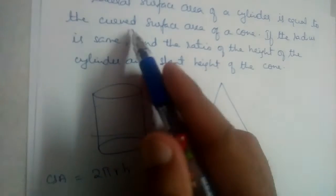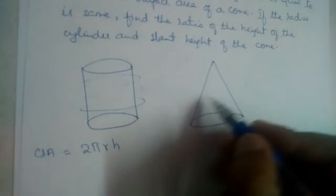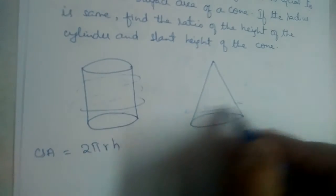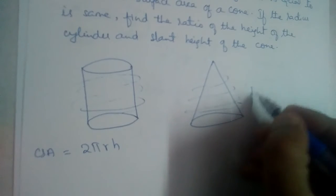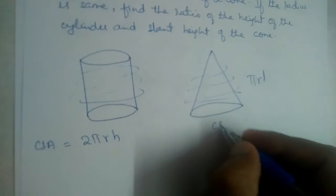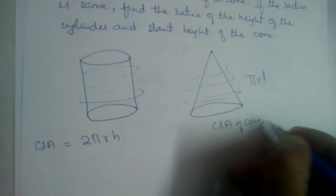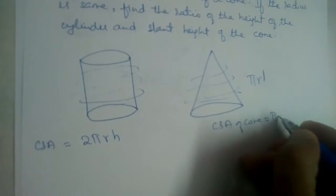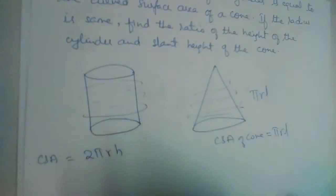This is equal to the curved surface area of the cone, which is this part. The curved surface area of a cone is πrl. So both are equal.